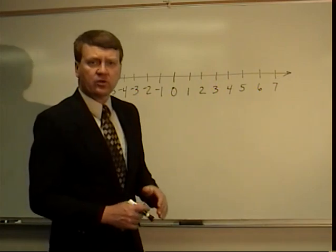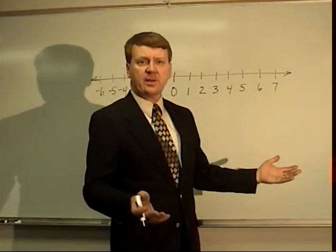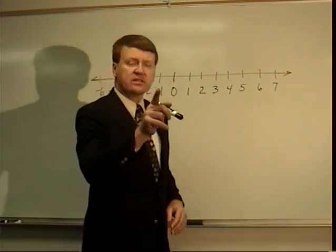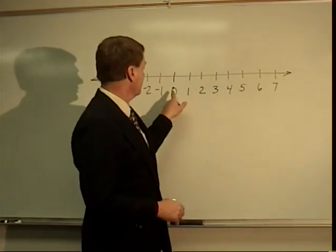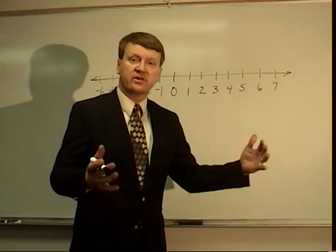We're going to start with the number line. We all know about our whole numbers: one, two, three, on down. Well, there's opposites. By the way, the dividing line is zero. Zero is the only number that is not positive nor negative - neutral, it's a dividing line.